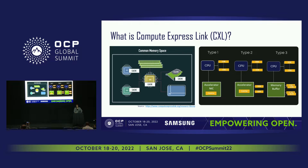So what is Compute Express Link? You would have already heard about it, and there was also a forum on Thursday to learn more. What it does is provide a common memory space across multiple system components present in the server, and provides the cache coherency protocol and the interconnect so that the memory across all these different devices is open to all the devices.